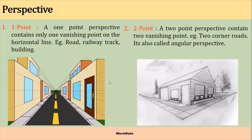A one-point perspective projection contains only one vanishing point on the horizontal line. Examples include a road, railway track, and building. In this figure, you can see the road is vanishing at a single point — this is called the vanishing point. Similarly, these buildings are also vanishing at this point. This is called a one-point perspective projection.